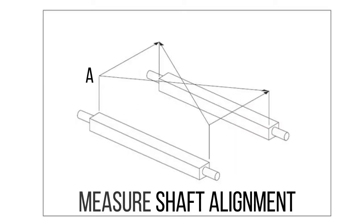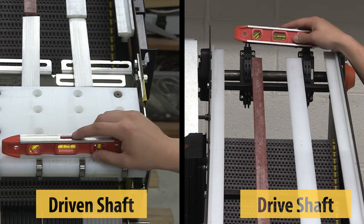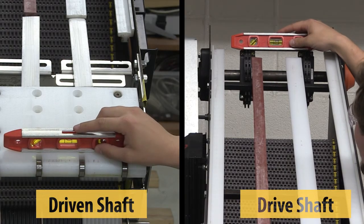To measure shaft alignment, four distances need to be measured. First ensure that both shafts are horizontal. This can be done with a level.